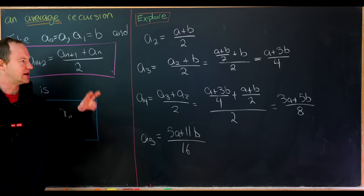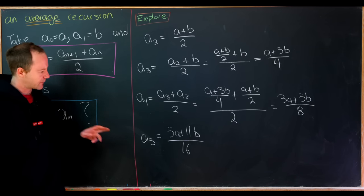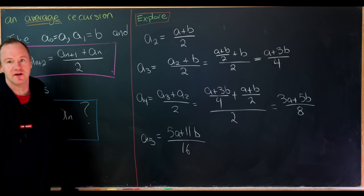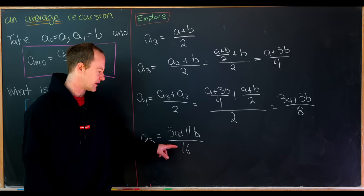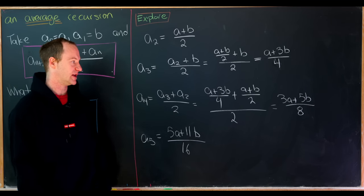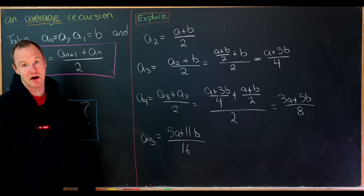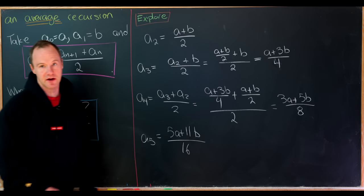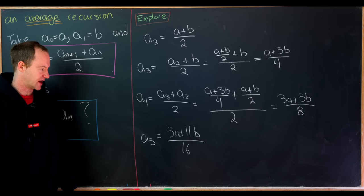Looking at these values, it seems clear this will converge. The denominator is a power of 2 and grows very quickly, while the numerators always stay smaller than that power of 2. So the coefficients 5 and 11 get dominated by 16, and so on. We'll check convergence carefully.